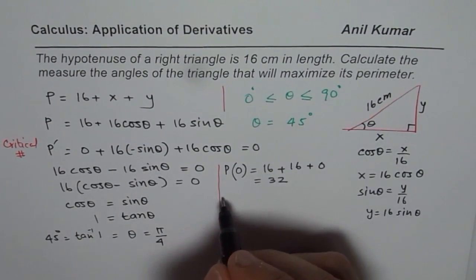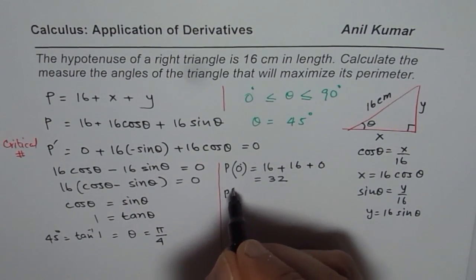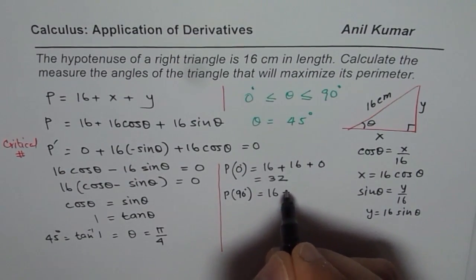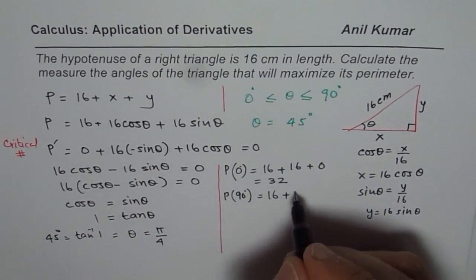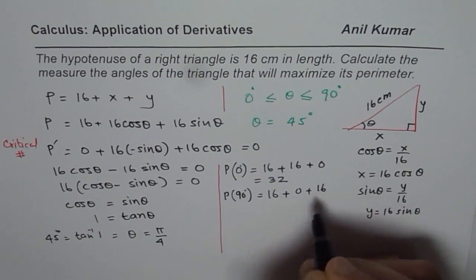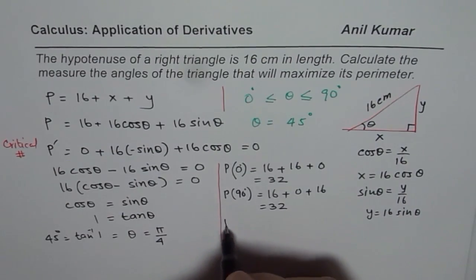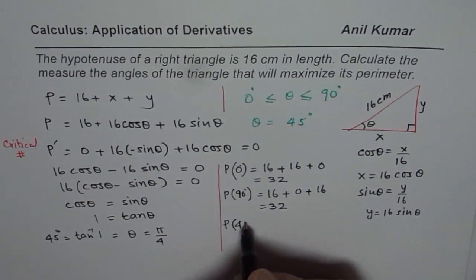If we consider 90 degrees, so the perimeter for 90 degrees will be 16 plus cos of 90 is 0 plus 16 and that also gives us 32. Now, let us calculate the perimeter for 45 degrees.